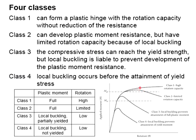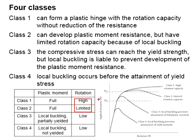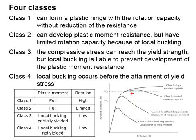In principle, class one and class two both achieve the full plastic moment. The difference between class one and class two is the rotational degree, or in another term, the ductility. Class one undergoes a larger degree of rotation in comparison to the smaller degree of rotation of class two.